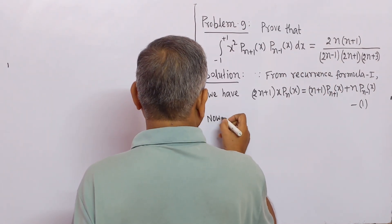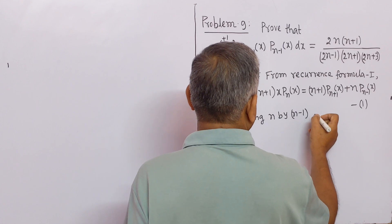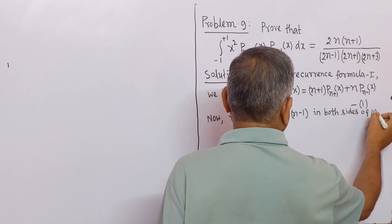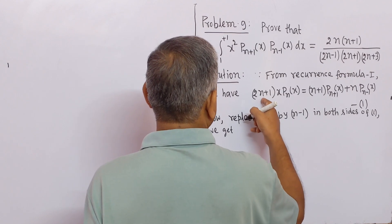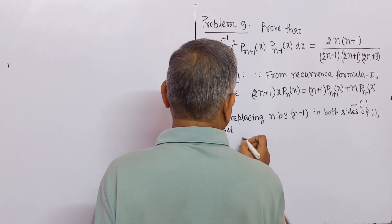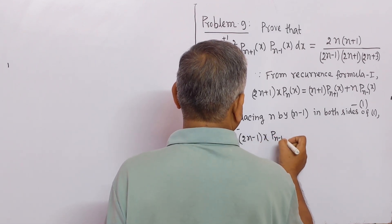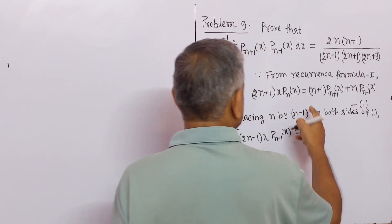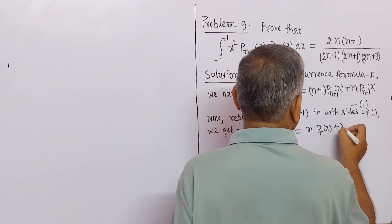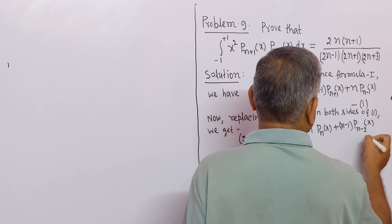Now, replacing n by n-1 in both sides of equation 1, we get: (2n-1) x P_(n-1)(x) = n P_n(x) + (n-1) P_(n-2)(x). This is equation number 2.